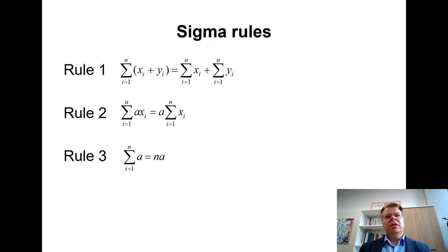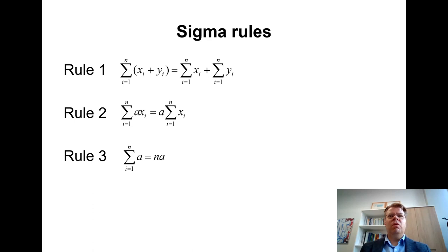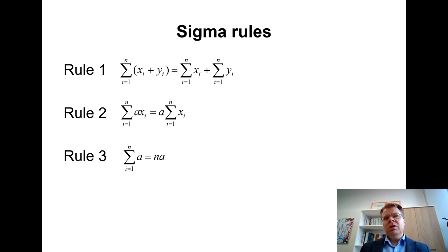The first rule is that if you have two random variables X and Y and we sum over their sum, then we can separate the sigma operator into two parts — the sum of Xi plus the sum of Yi. This rule comes from the fact that we can always reorganize the sum in a different order. The order in which we sum the different elements doesn't matter. We can first sum all elements of X and all elements of Y and get the same result.